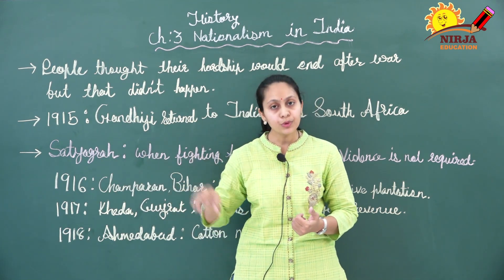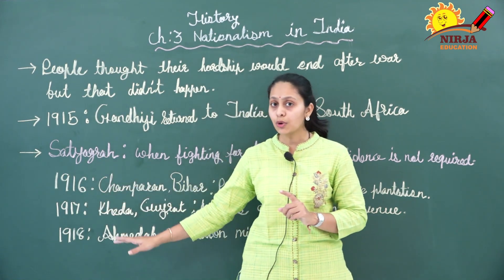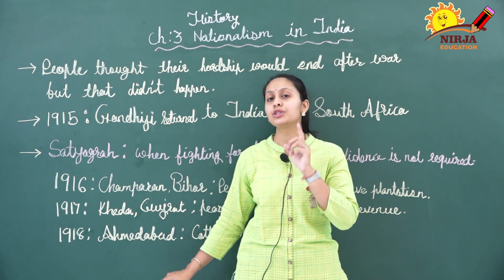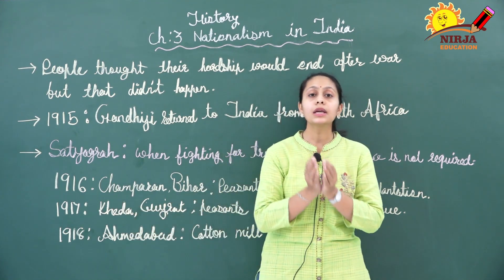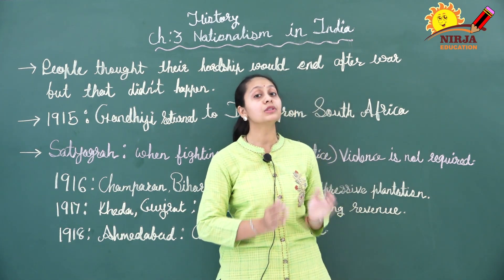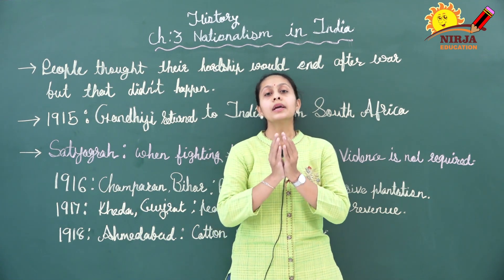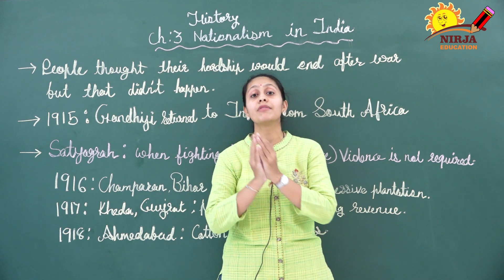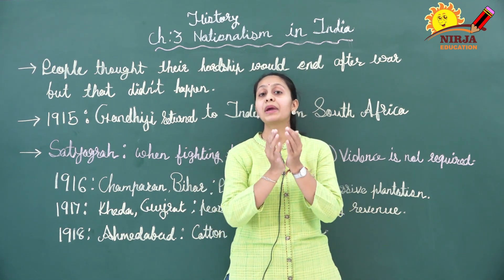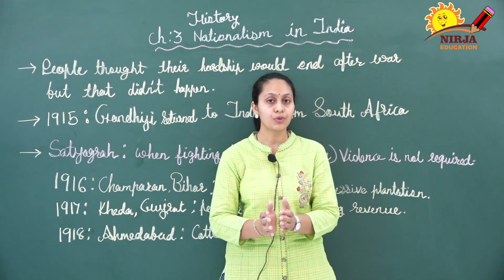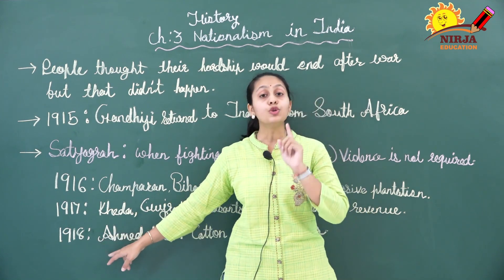Gandhiji, along with a few communities of India, started Satyagraha movements. The very first was in 1916: along with the peasants of Champaran, Bihar, he took part in a Satyagraha movement against the oppressive plantation policies. Then in 1917, in Kheda district, Gujarat, he supported peasants in a Satyagraha movement against revenue collection. Because of a plague epidemic and crop failure, these peasants were unable to pay revenue and wanted relaxation, which the government did not guarantee. Gandhiji helped them fight using Satyagraha — a non-violence movement.